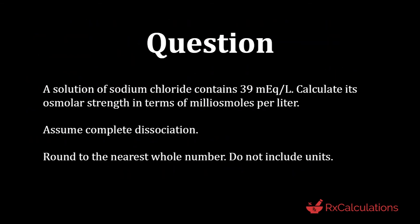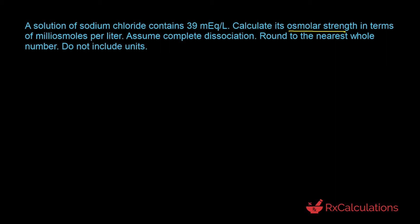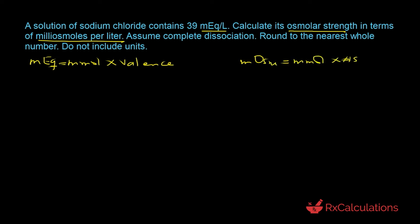This question says: a solution of sodium chloride contains 39 milliequivalents per liter. Calculate its osmolar strength in terms of milliosmoles per liter. Assume complete dissociation. Round to the nearest whole number. Do not include units. An elegant approach is to recall the fundamental equations: milliequivalents equals millimoles times valence, and milliosmoles equals millimoles times number of species. Dividing both by liters, milliemoles per liter is a common term in both equations.